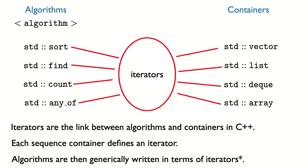This approach reduces the complexity of the standard library. For each container, we just implement an iterator. For each algorithm, we write it generically in terms of iterators. Iterators are the very important link between algorithms and containers in C++.